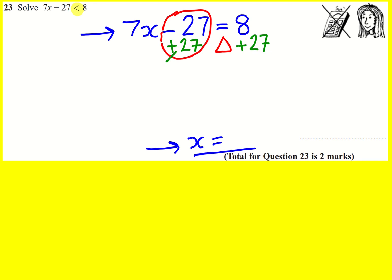I've got rid of that by adding 27, and I must do the same on this side. So what does that leave me with?